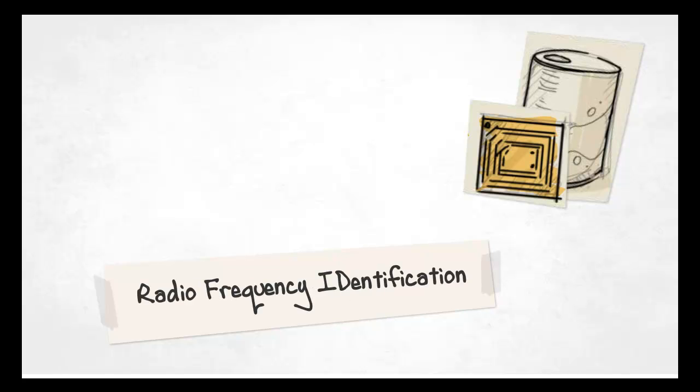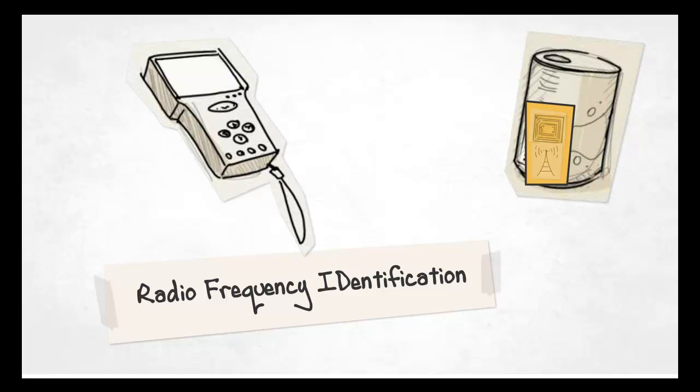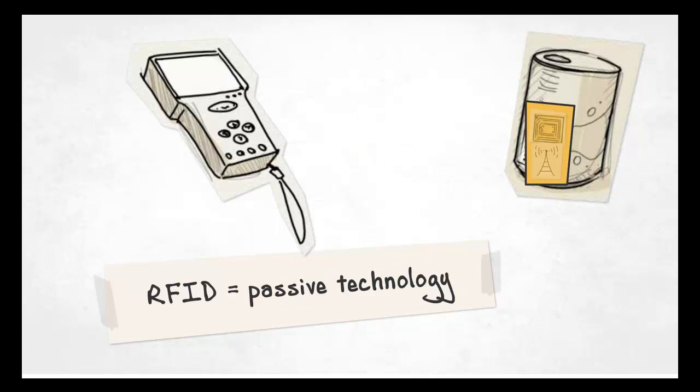While RFID tags contain a small microchip and a transmitter, they can only be activated by an RFID reader, to which the tag returns its signal. That's why RFID is called a passive technology.